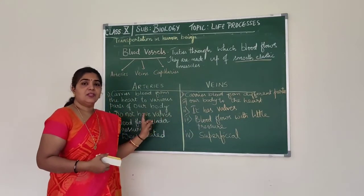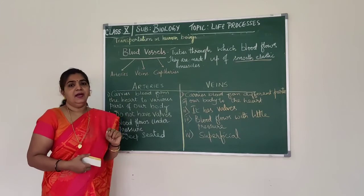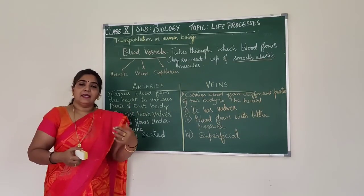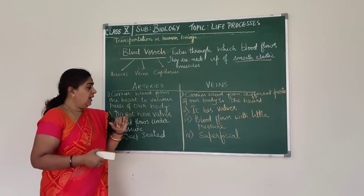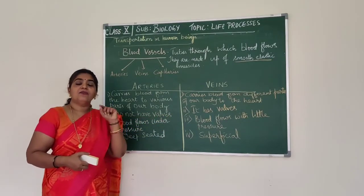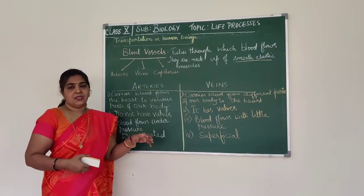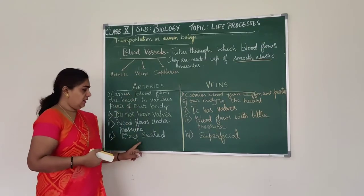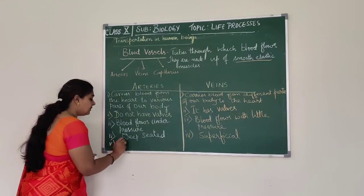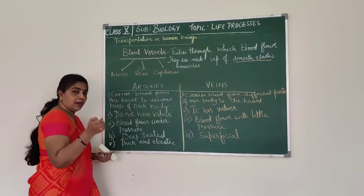Let us see the differences between arteries and veins. Arteries always carry blood from the heart to different parts of the body. Arteries do not have valves, and the flow of blood through arteries is always under pressure. Arteries are deep-seated — located deep in the body — and are made up of thick, elastic muscle.